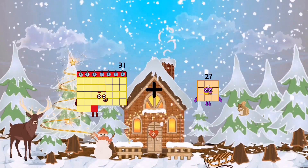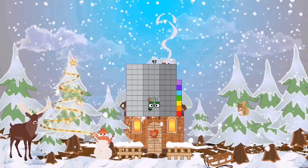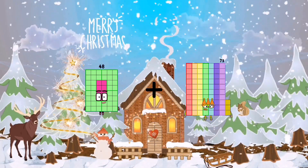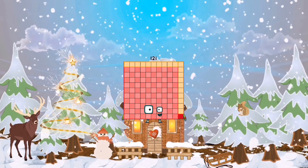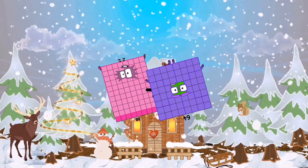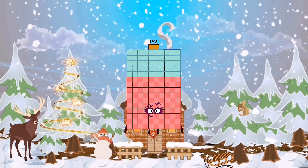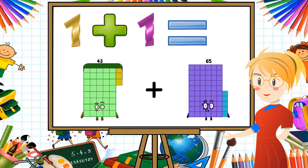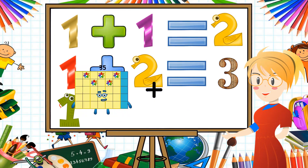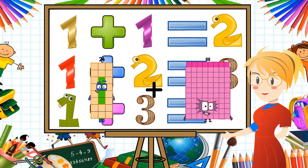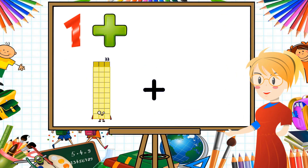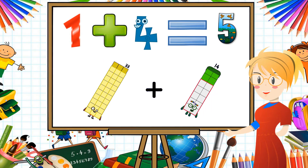31 plus 66 equals 97. 48 plus 73 equals 121. 88 plus 64 equals 152. 43 plus 77 equals 120. 44 plus 90 equals 43. 33 plus 14 equals 47.